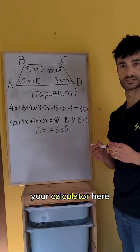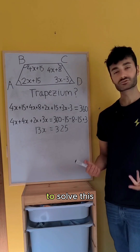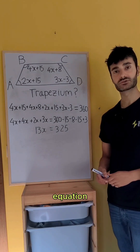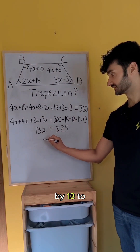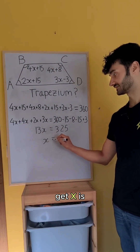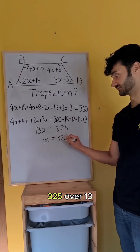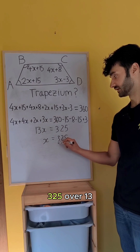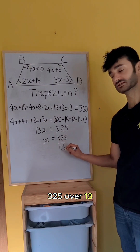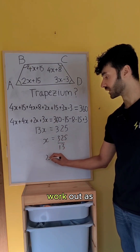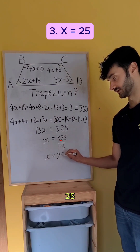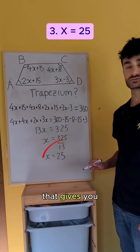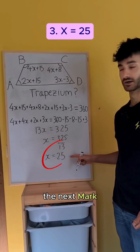You could use your calculator here. To solve this equation, divide both sides by 13 to get x = 325 over 13, which you can work out as 25. That gives you the next mark.